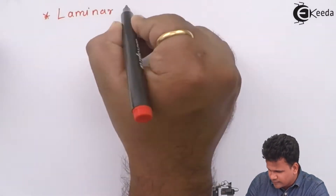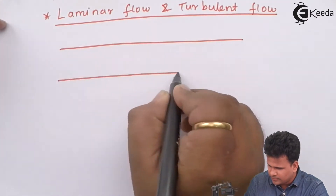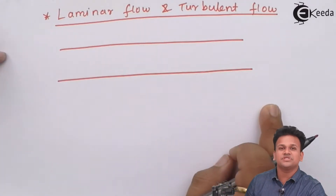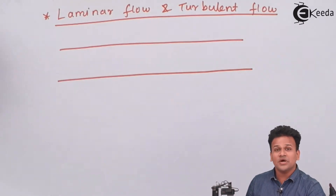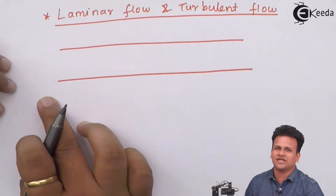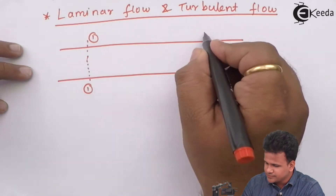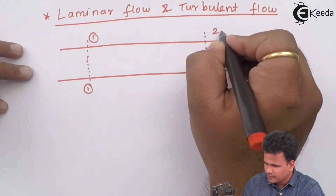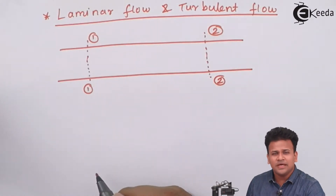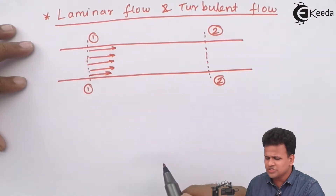To understand laminar and turbulent flow, let us consider flow through a pipe. We will use the Eulerian approach of studying fluid mechanics, dividing the pipe into two sections: section 1-1 and section 2-2. In this flow, when the adjacent layers of the liquid are parallel to each other, that flow is called laminar flow.